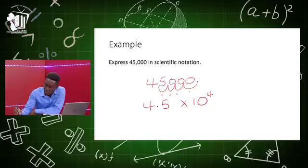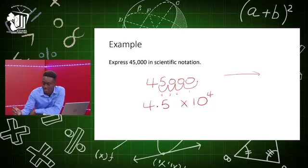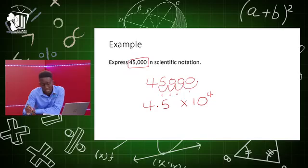We moved the point four times, so this is 10 to the fourth power. Since 45,000 is greater than 1, the power is positive. To remember the rule: if you are moving the point to the left, the power will be positive; if moving to the right, the power will be negative. Alternatively, if the original number is greater than 1, the power is positive; if it is less than 1, the power is negative.